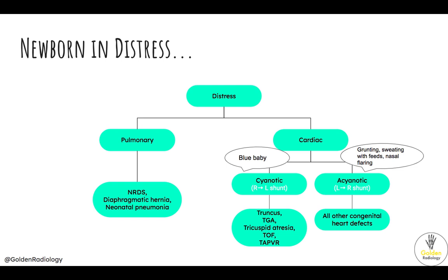These babies will present with cyanosis early, with the exception of mild Tetralogy of Fallot, which can present later. Because they are bypassing the pulmonary circulation, they will have a patent ductus arteriosus or other defect keeping them alive. These are the babies that are going to require surgical treatment ASAP.